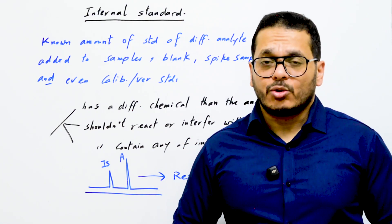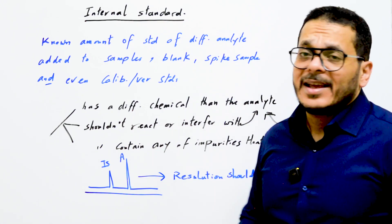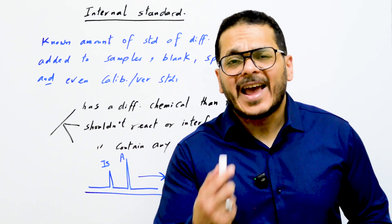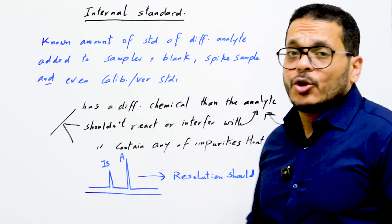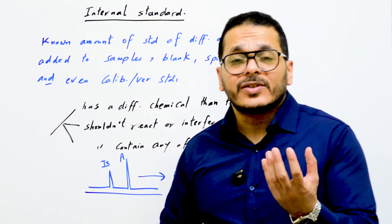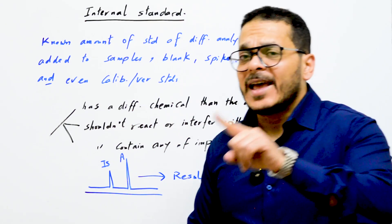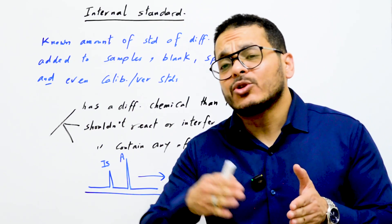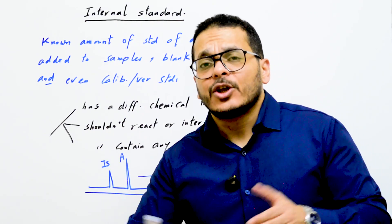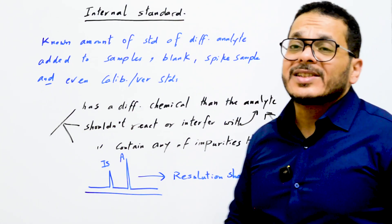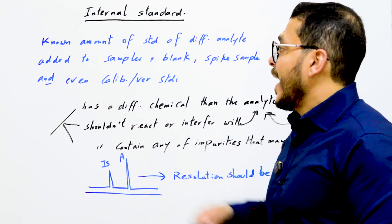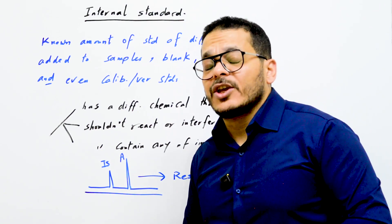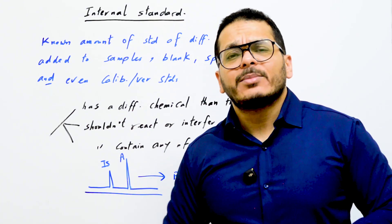The second solution is the internal standard. Internal standard is a very important and easy solution that also gives high accurate results. An internal standard is a known amount of a standard chemical compound which is different from the analyte of interest — different in chemical structure — and cannot react or interfere with the analyte of interest. It is added to blank samples, spike samples, routine samples, and also calibration or verification standards.